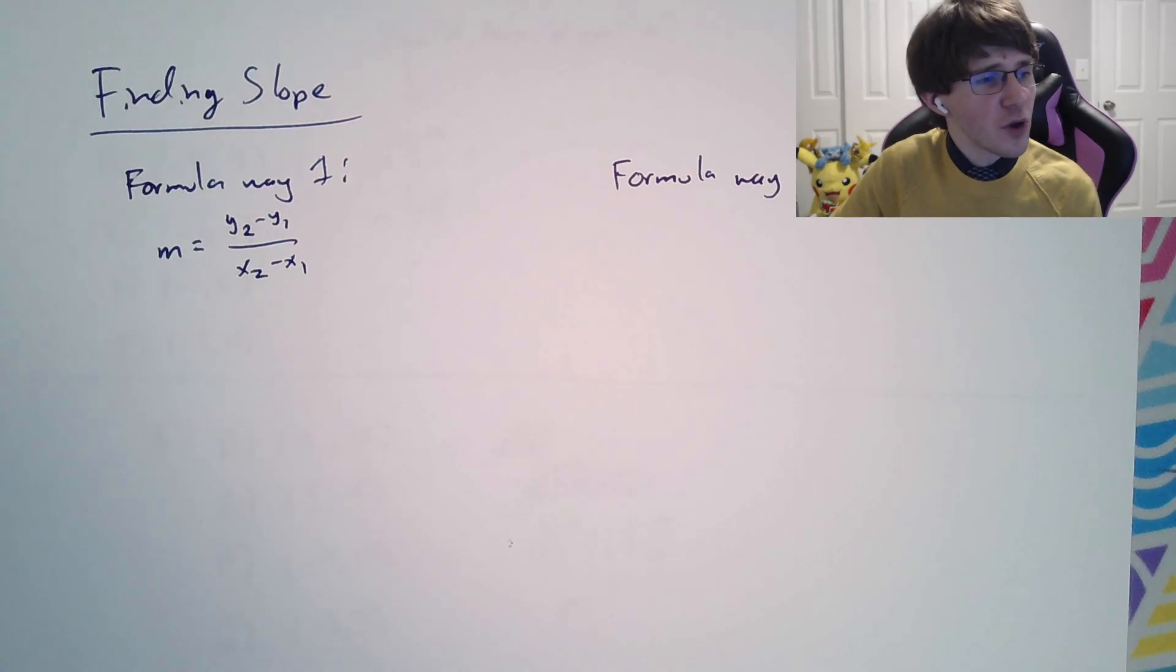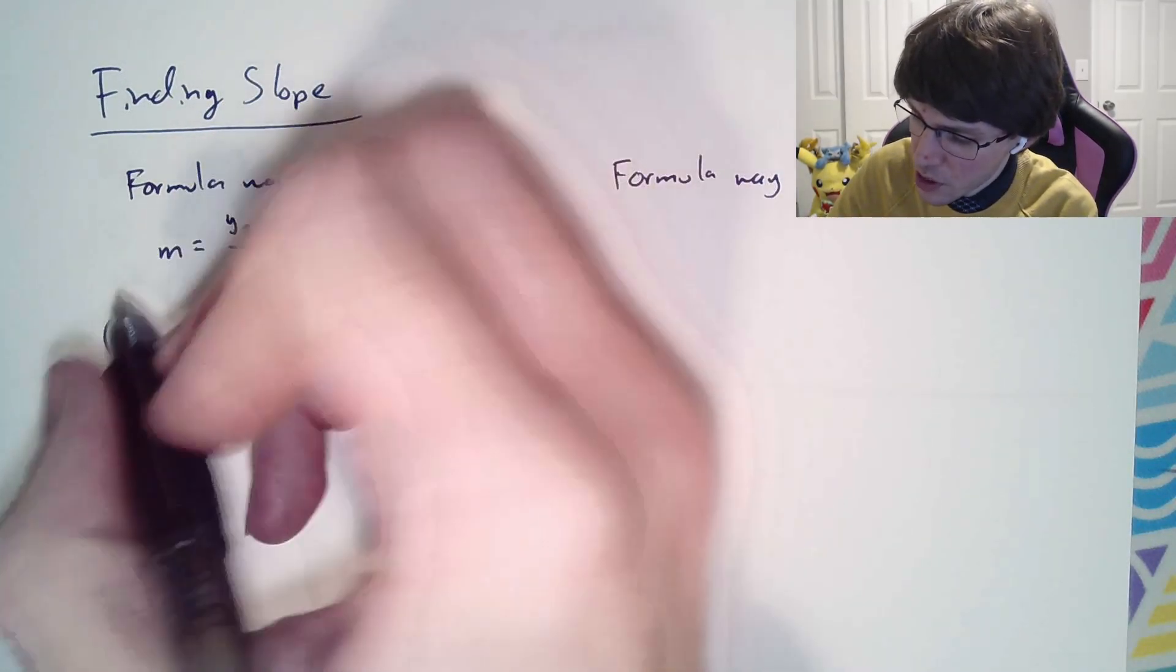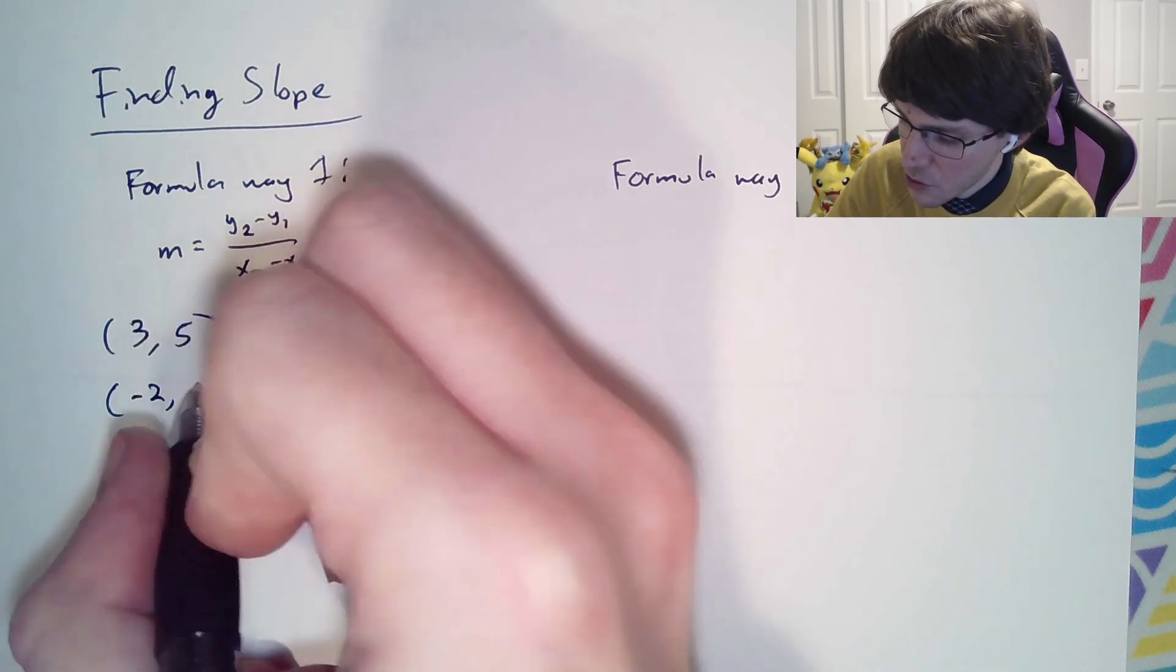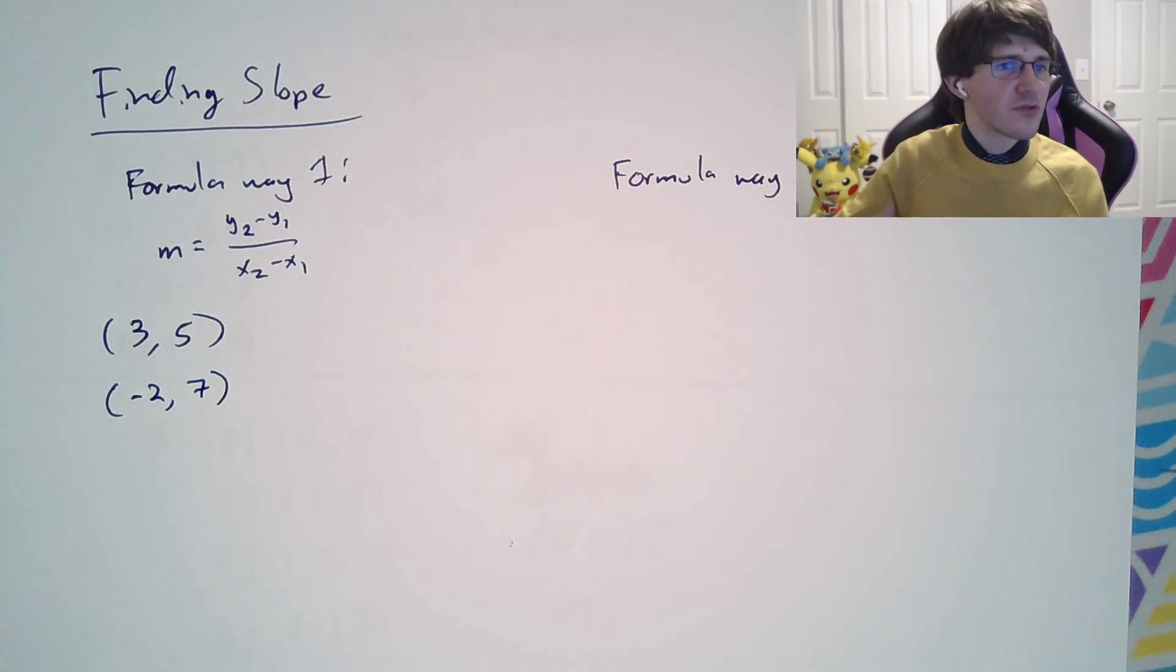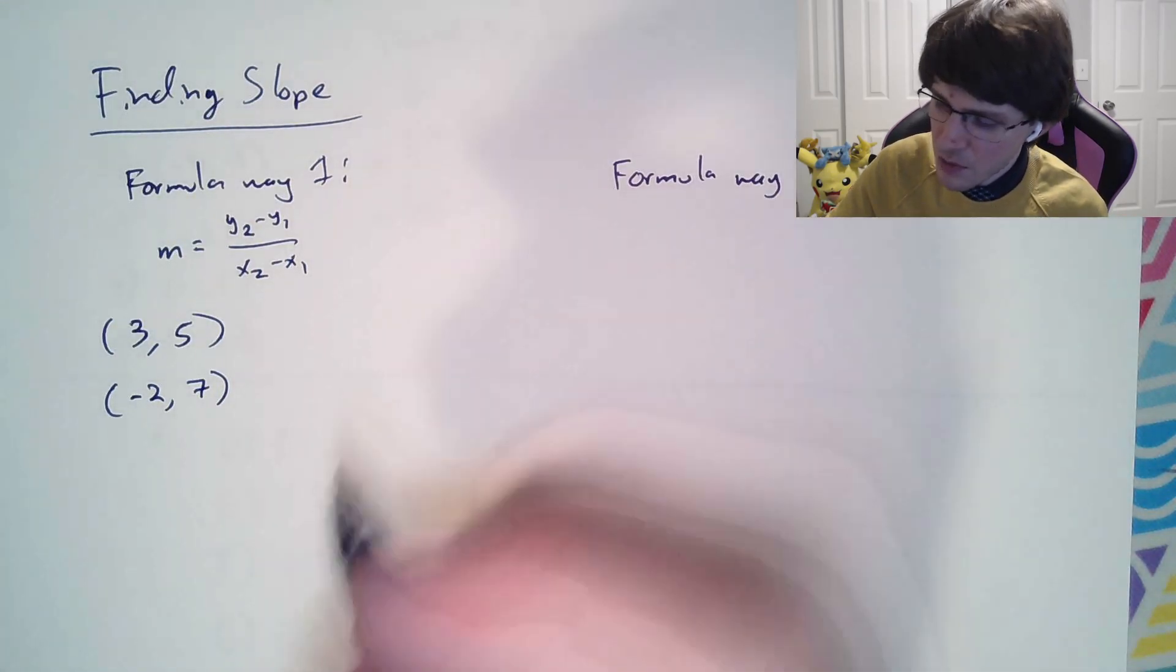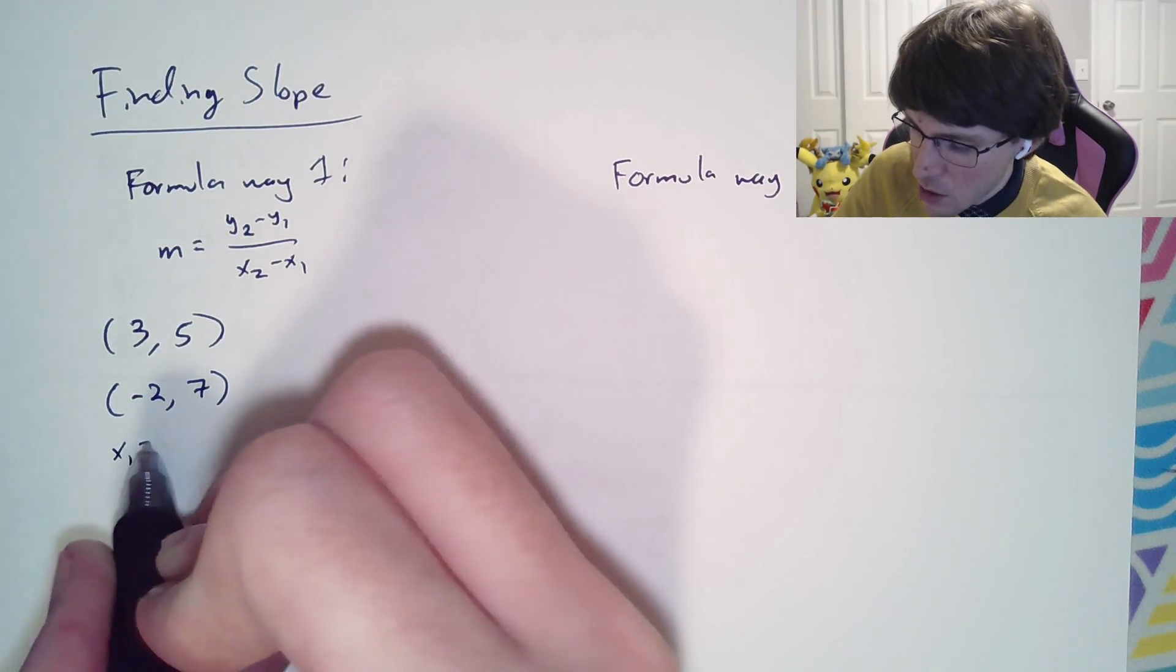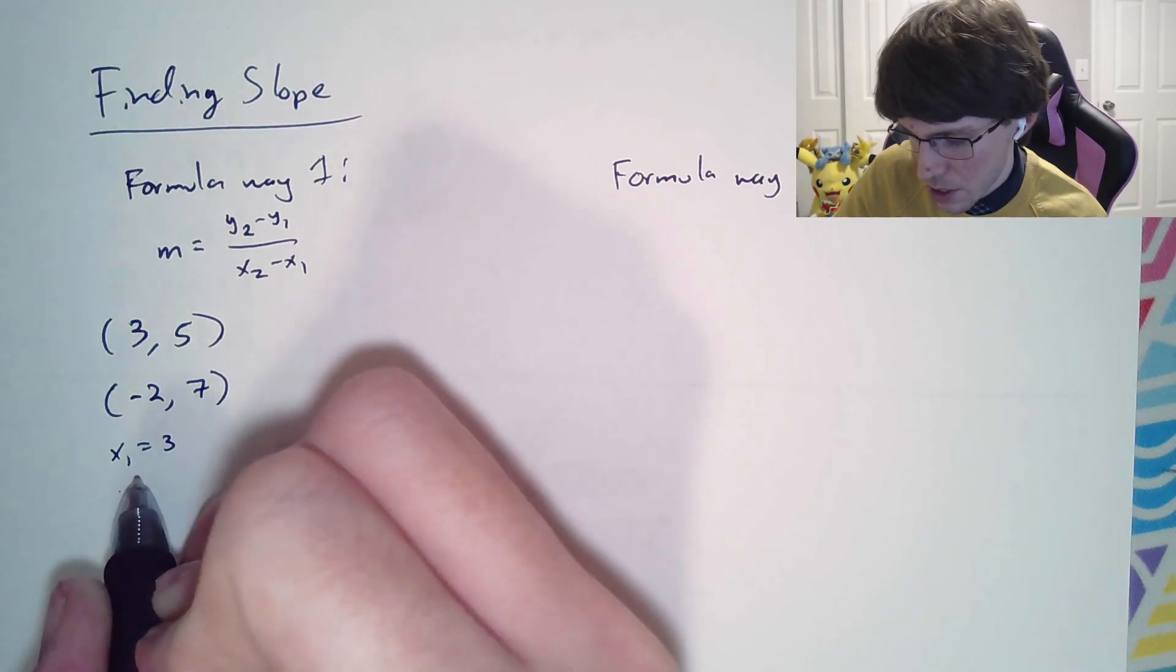So if you have a problem where you have two coordinates, let's say we have 3,5 and negative 2,7, and you need to find the slope, you could do it fast or slow. The really slow way would be to label off every single one of these.